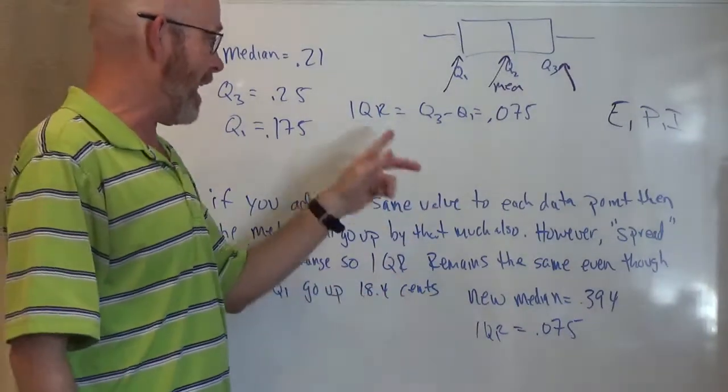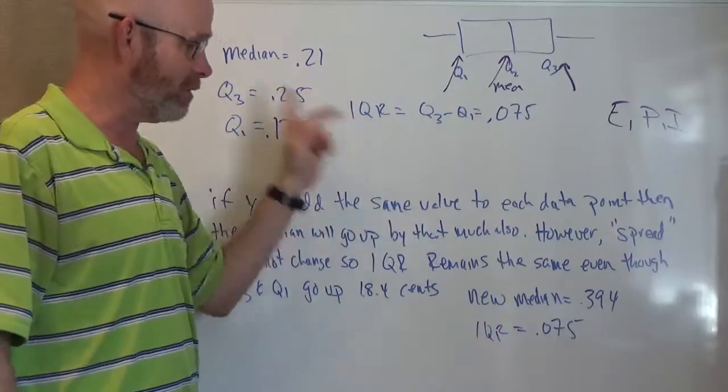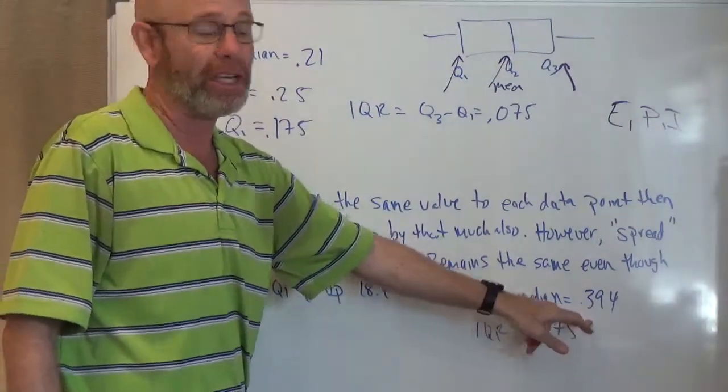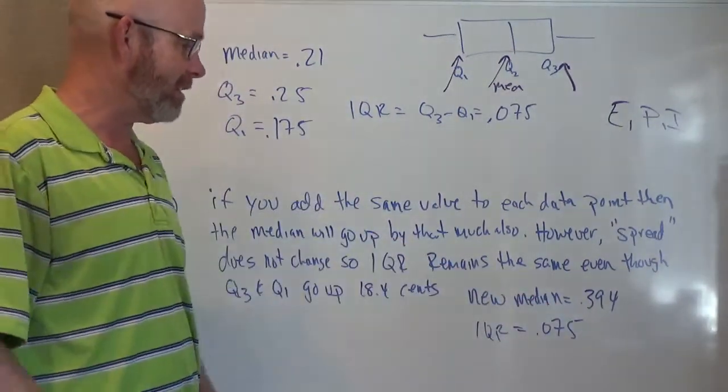So the new median gets added, that 18.4 cents gets added to whatever you had here. So for me, it's 39.4 cents. The interquartile range stays the same at seven and a half cents.